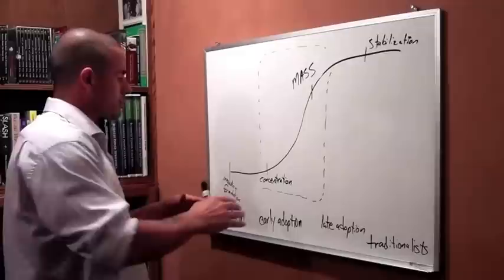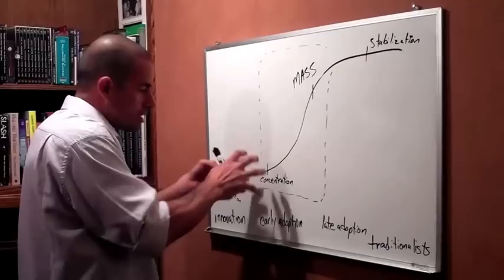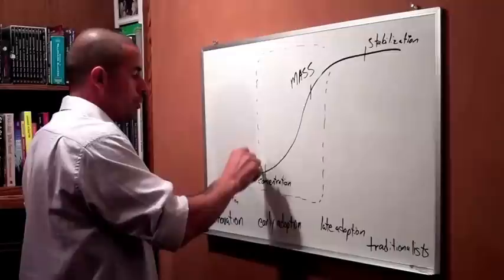It's called an S curve, growth windows. Momentum. And there's always stages. It goes from the innovation where the formulation and innovation to little concentration to critical mass and then to stabilization.